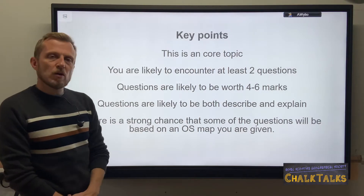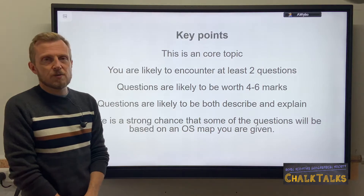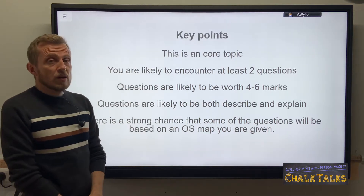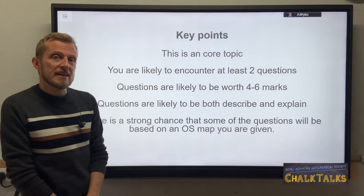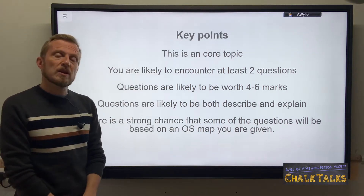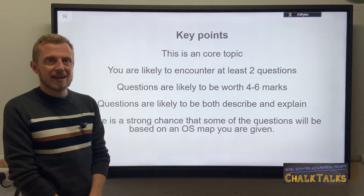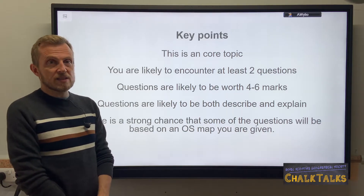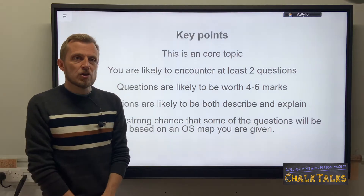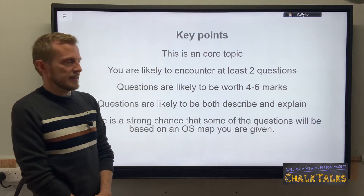First of all, all questions are core questions, which means you have to answer them. You're likely to encounter at least two questions in the SQA exam paper and those questions are more than likely going to be worth between four and six marks. Therefore the number of points that you revise for the different areas of urban geography should have a minimum of four and probably up to six points revised.